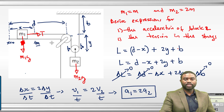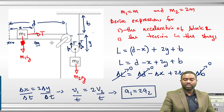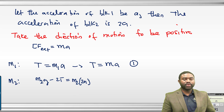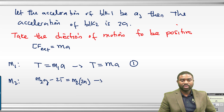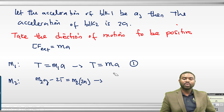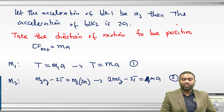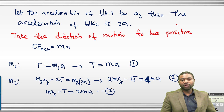For block 2, there are two tensions: T and T. So we have M2·G minus 2T equals M2 times A/2. That gives 2MG minus 2T equals 2M·(A/2), which simplifies to MG minus T equals MA. Let us call this equation 2.